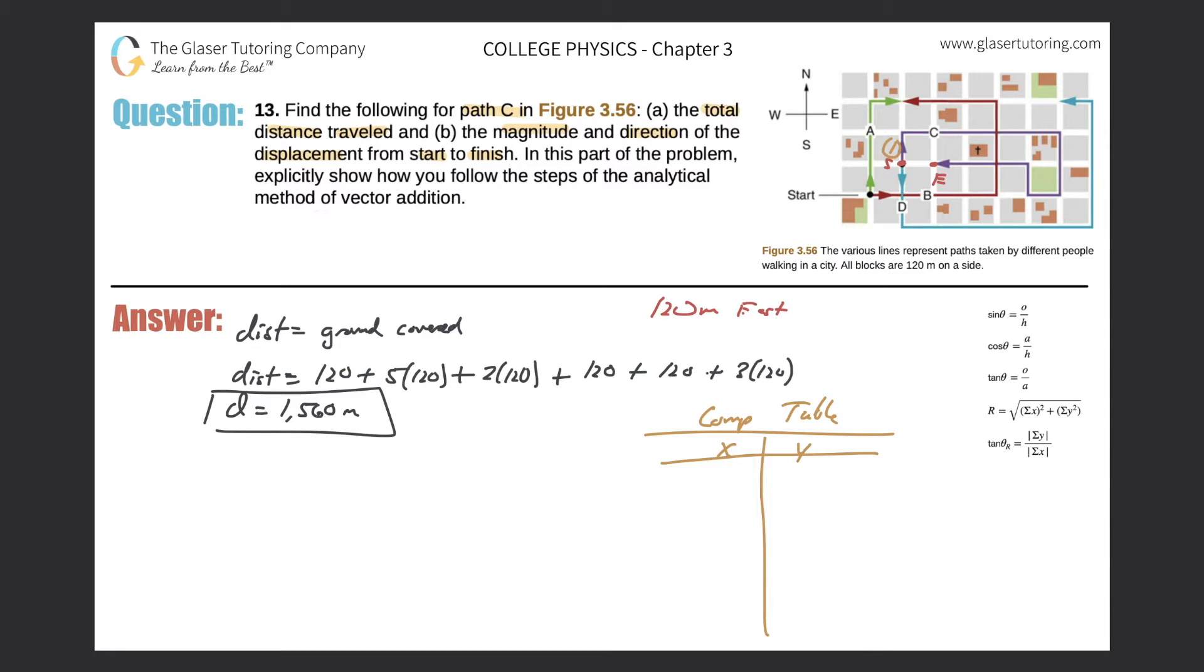This would be one vector going straight up, then this whole thing would be vector number two. Now we go down, that would be vector number three. Then we go west, that's four. North, that's five. And then finally we go west again, so that would be six.